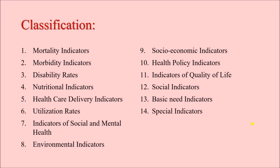Coming to the classification: sometimes a question asks you to enumerate different health indicators. Enumeration means you just have to write the names — you do not have to describe them unless the question specifically asks you to describe them. If the question says 'enumerate,' just write the names and that is more than enough.